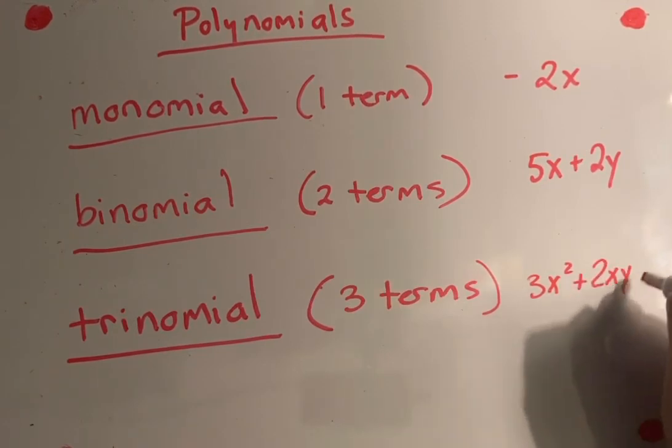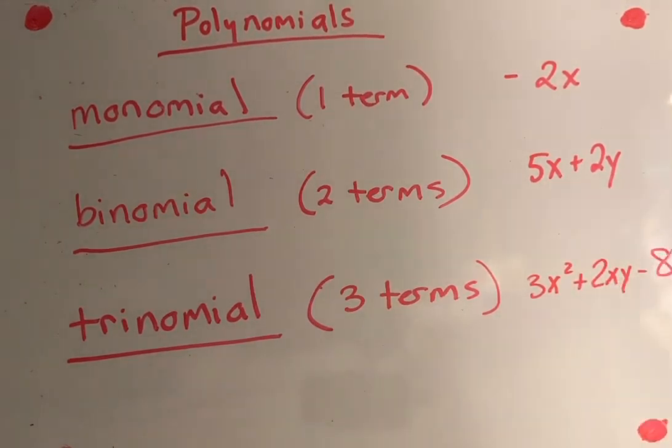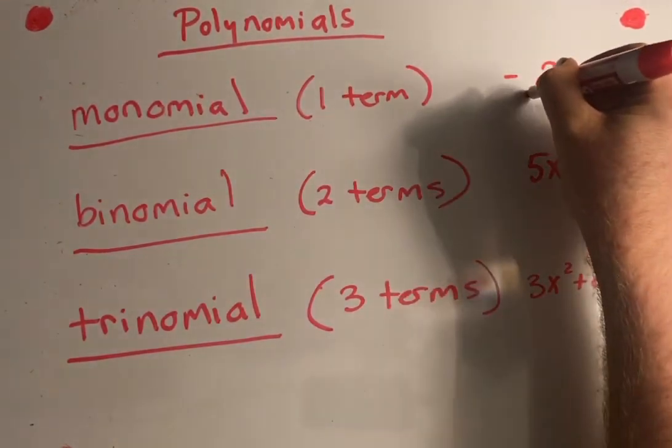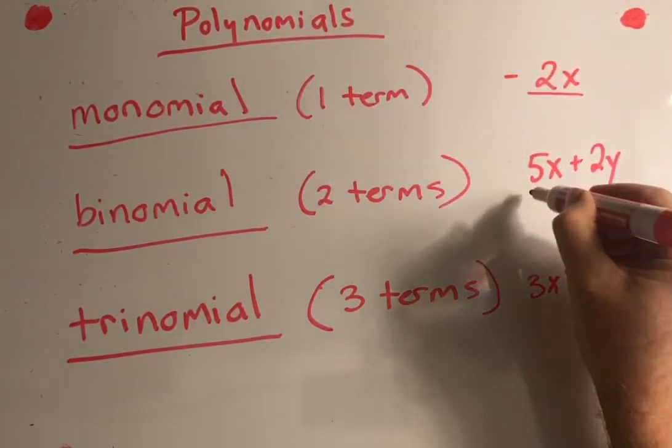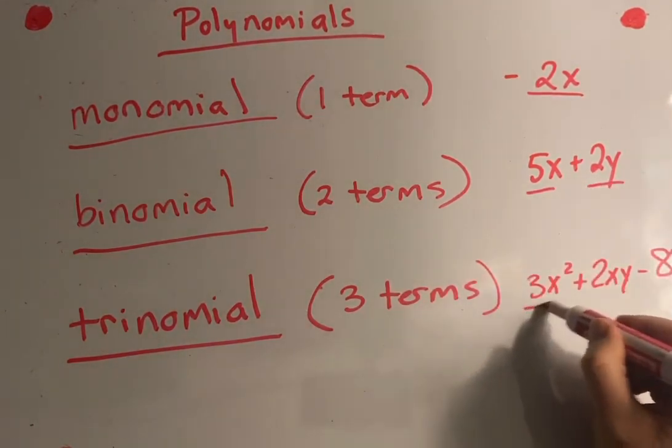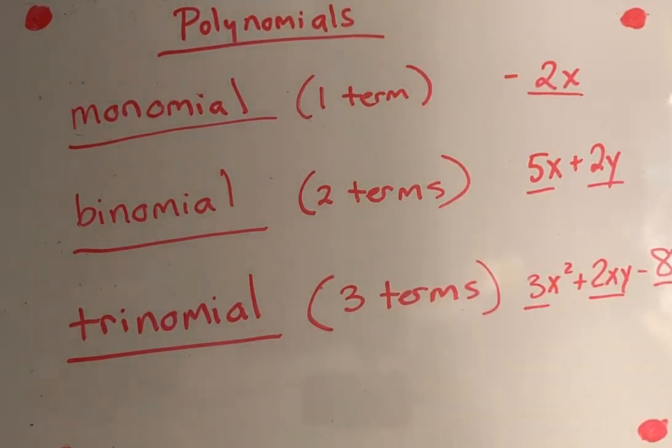A trinomial would be 3x squared plus 2xy minus 8. Because there are three terms. So monomial has one term, binomial has two terms, trinomial has three terms.